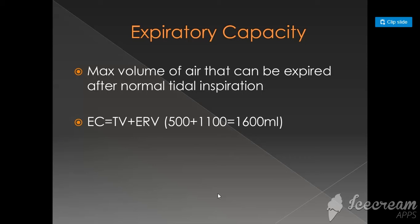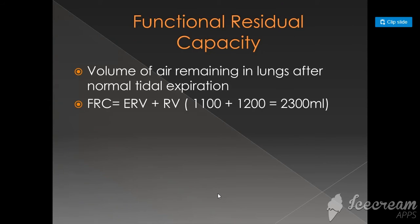Next is Functional Residual Capacity. FRC is how much air remains in your lungs after the normal tidal expiration. It is the sum of Expiratory Reserve Volume and Residual Volume. ERV plus Residual Volume gives a total of 2300 ml.